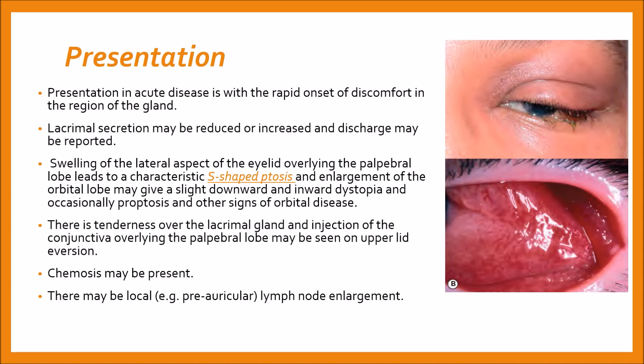Swelling of the lateral aspect of the eyelid overlying the palpebral lobe leads to the characteristic S-shaped ptosis, as seen in the picture on the top. Enlargement of the orbital lobe may give a slight downward and inward dystopia. Occasionally proptosis and other signs of orbital disease may also be seen.